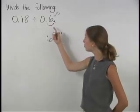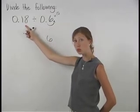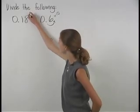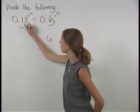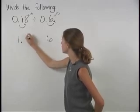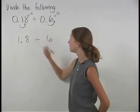If we multiply 0.6 times 10, we must also multiply 0.18 times 10, which moves the decimal point one place to the right and gives us 1.8. So we have 1.8 divided by 6.